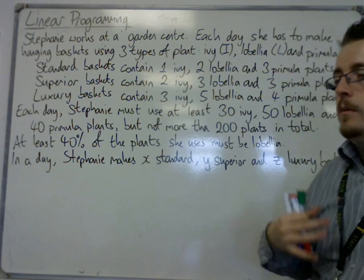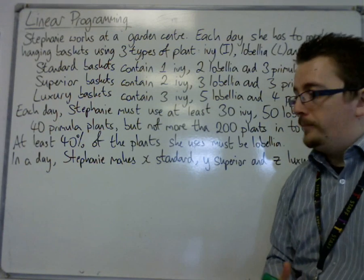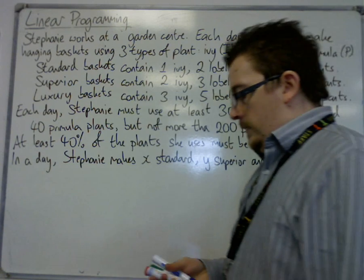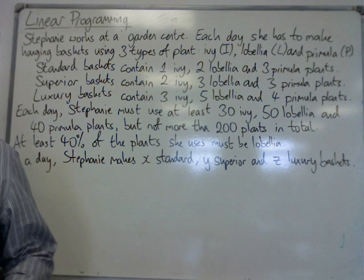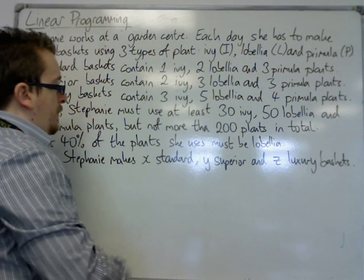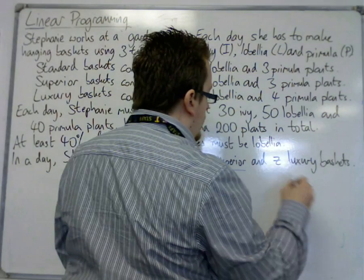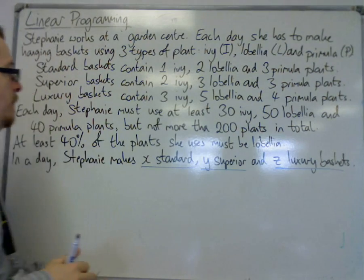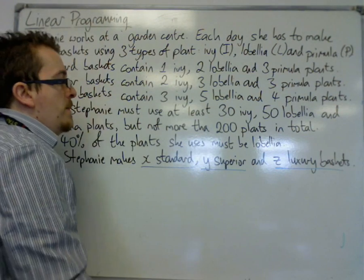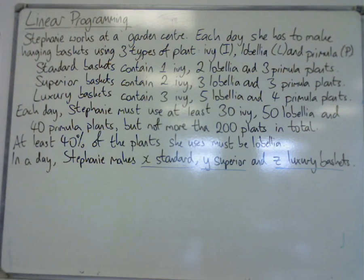From this we need to come up with five inequalities, and we also need to make sure that they are simplified. This is an x, y, and z problem, so there are three variables this time. We've got x as the number of standard baskets, y is the number of superior baskets, and z is the number of luxury baskets.